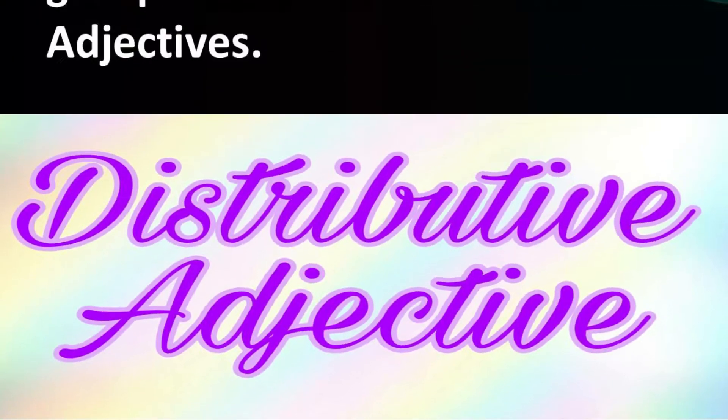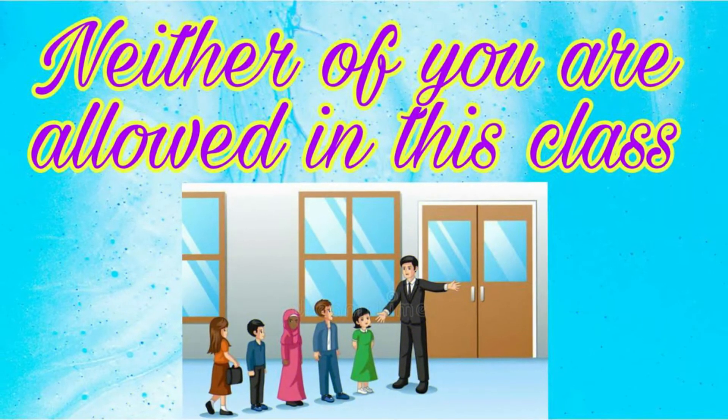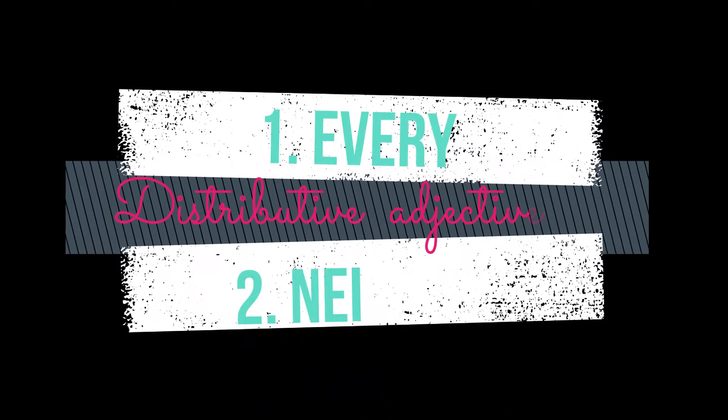What are distributive adjectives? An adjective which is used to refer to each and every person or thing separately, or to describe a specific member out of a group, is called a distributive adjective, like every, neither. For example: 'She watches TV every day.' 'Neither of you are allowed in this class.' So here, words like every and neither signify distributive adjectives.